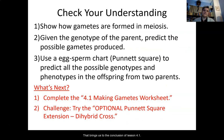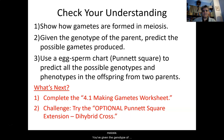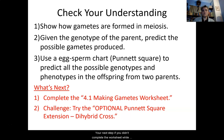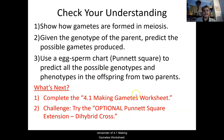That brings us to the conclusion of lesson 4.1. At this point, you've shown how gametes are formed in meiosis. Given the genotype of the parent, you predicted the possible gametes produced. You also used a Punnett square to predict all the possible genotypes and phenotypes in the offspring from those two parents. If you didn't complete the worksheet while watching the video or going through the PowerPoint, now's your time to do that — go ahead and complete the remainder of the 4.1 Making Gametes worksheet.